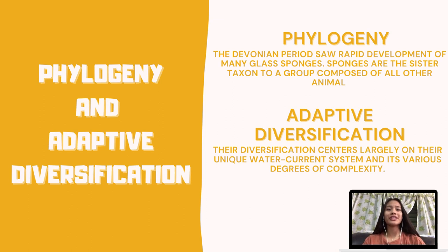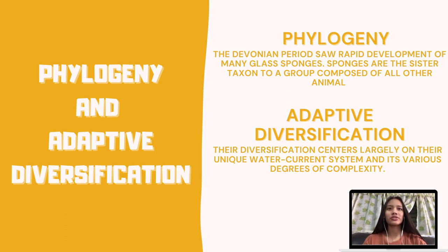Phylogeny and adaptive diversification. The Devonian period saw rapid development of many glass sponges. Sponges are the sister taxon to a group composed of all other animals. Their diversification centers largely on their unique water current system and its various degrees of complexity.